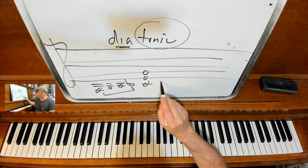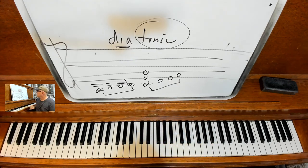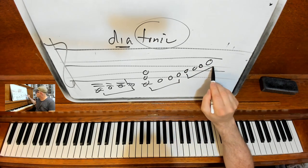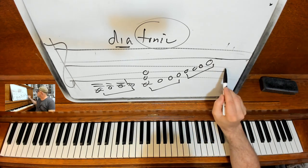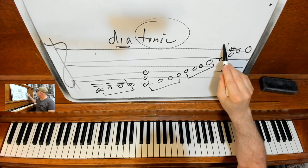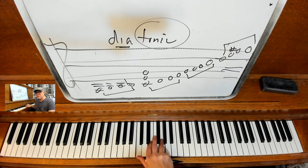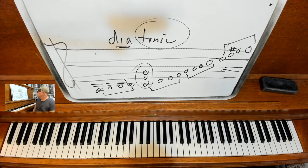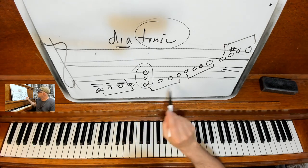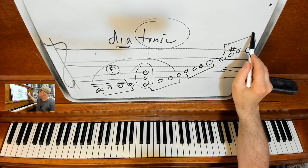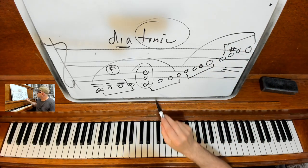That's a major tetrachord group — C, D, E, F — and another major tetrachord group. The last four notes of the C scale are G, A, B, C. The G scale is G, A, B, C, D, E, F-sharp, G. In the key of G, going down an octave — G, A, B-flat, C — there's your C chord again. So that C chord can do three different jobs. The F scale and the G scale share tetrachords with the C scale.